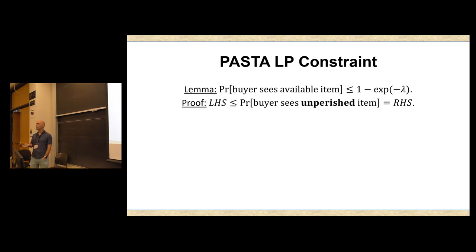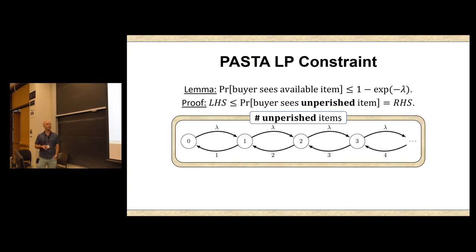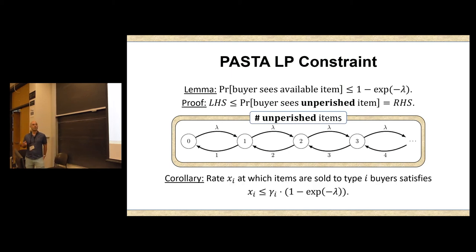What we're going to notice is that if I look at a buyer at any point in time, the probability that this buyer arrives right now and observes an available item, which is obviously a prerequisite for me selling them an item, is at most 1 minus e to the minus lambda, where lambda is the arrival rate of items. And in one line, the proof looks as follows. The left-hand side, the probability that a buyer sees an available item is upper bounded by the probability that they see an unperished item that might have been sold, but had I not sold anything, would have been up for grabs. And this is precisely equal to the right-hand side by standard queuing theoretic analysis of the birth-death process.